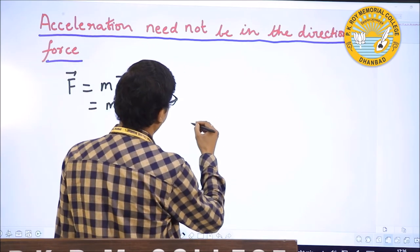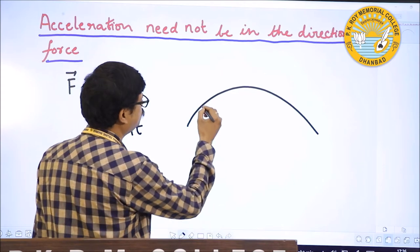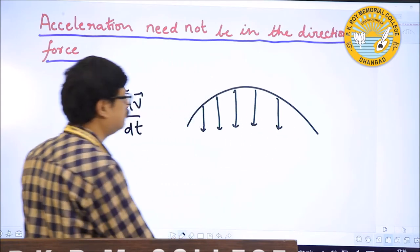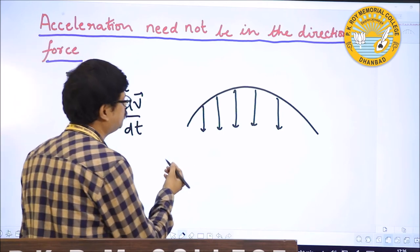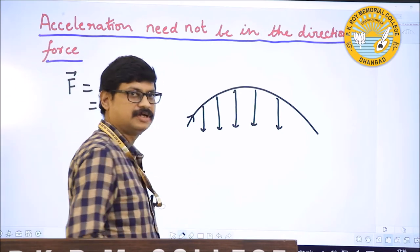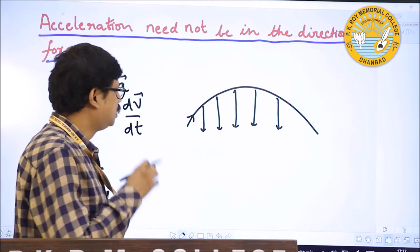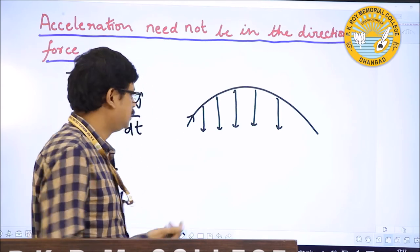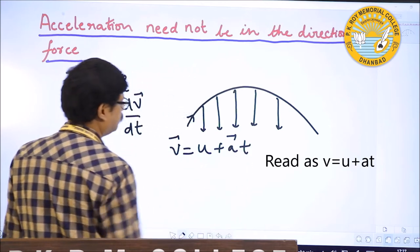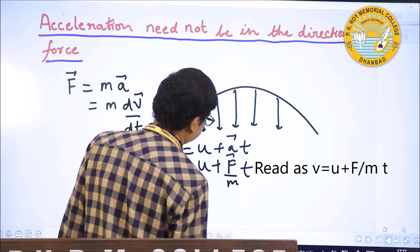Suppose we are talking about a projectile motion. We know that the only force acting here is mg and that is always vertically downward. So if the projectile has been thrown with some initial velocity, the initial velocity in the x direction will remain as it is throughout the motion, and the velocity in the y direction will keep on increasing with the passage of time. That is from the equation v equal to u plus at, and we can replace a by F/m.